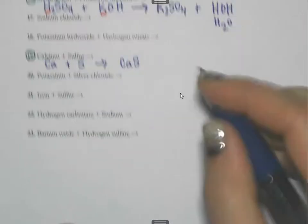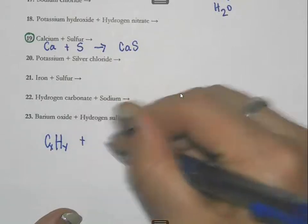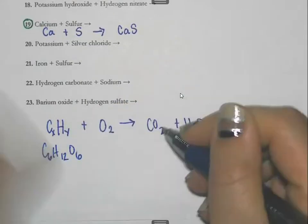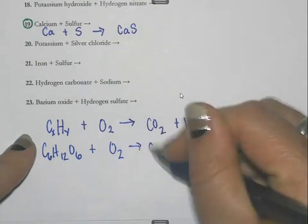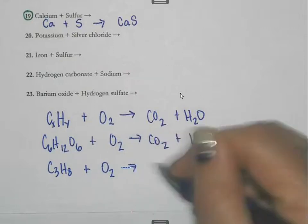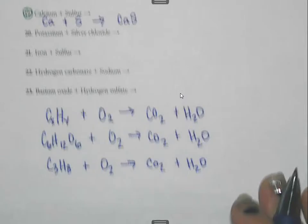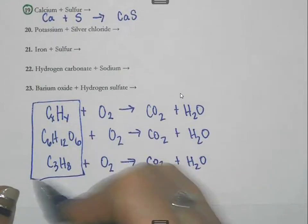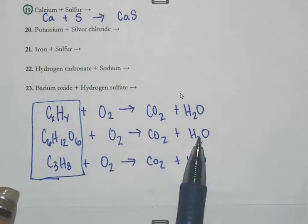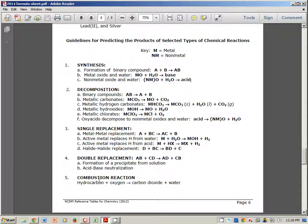The only type not covered is combustion reactions. They always involve something with carbon and hydrogen — call it CxHy — plus oxygen, and they always produce CO2 and H2O. It could be C6H12O6 or C3H8, but it still reacts with oxygen to produce carbon dioxide and water. The reference table tells you it's a hydrocarbon plus oxygen making carbon dioxide and water.